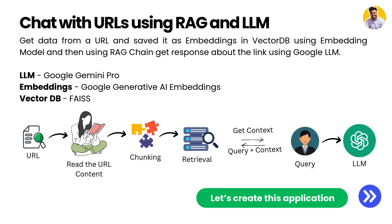For 'Chat with URLs', we need to get data from a URL, process it, and save it as embeddings in our vector database. Here we use FAISS as the vector DB, which is made by Facebook. Then we use the RAG chain to get a response from the vector DB based on the user prompt, pass it to the large language model as a prompt and context to get the final response. We use Google Gemini Pro 1.5 along with Google Generative AI Embeddings.